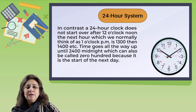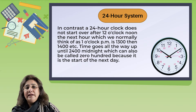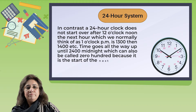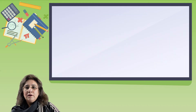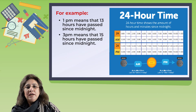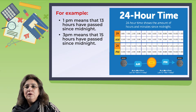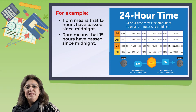Students, can you tell me what is meant by the numbers shown in red on the 24-hour clock? Yes, you are right — that's the 24-hour clock time. 24-hour time shows the amount of hours and minutes since midnight. For example, 1 PM means that 13 hours have passed since midnight; 3 PM means that 15 hours have passed since midnight.